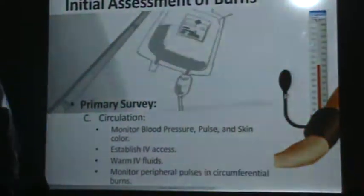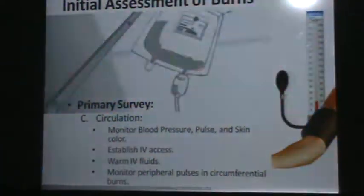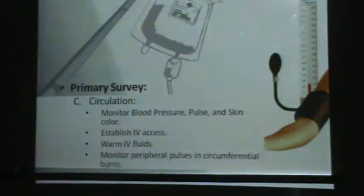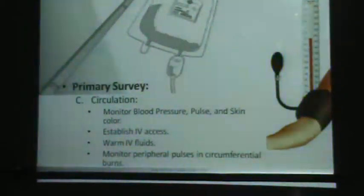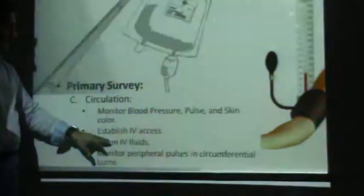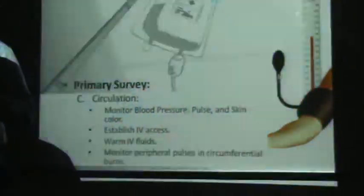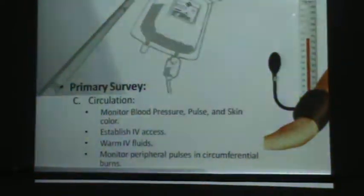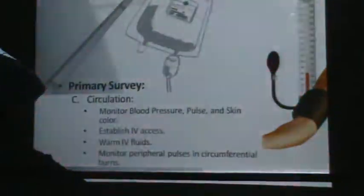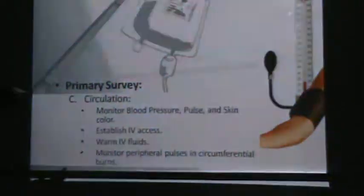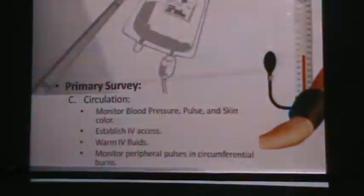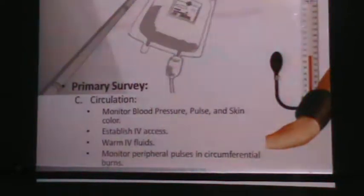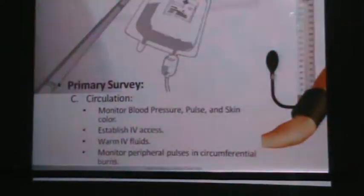C is for circulation. We assess blood pressure, heart rate or pulse, and temperature and color of the skin. We need to establish IV access so we can replenish electrolytes and water that the patient has lost. We also want to monitor peripheral pulses in circumferential burns to make sure the burn has not affected peripheral circulation.